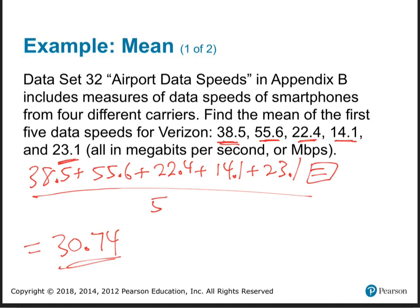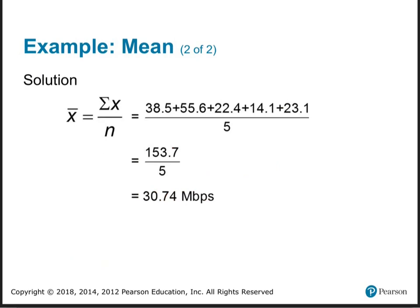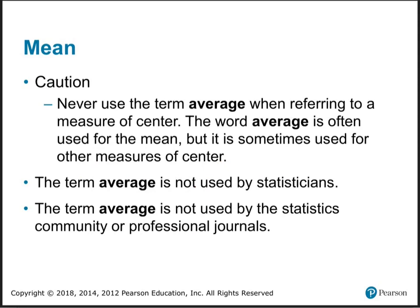So 30.74 is the mean. On the test you can't use StatCrunch, so I want you used to the calculator. Now, the textbook author says statisticians never use the term 'average,' and I've already used it several times — I think that's a little dramatic. Just know there are several kinds of average: it doesn't just mean the mean, there's also mode and median.